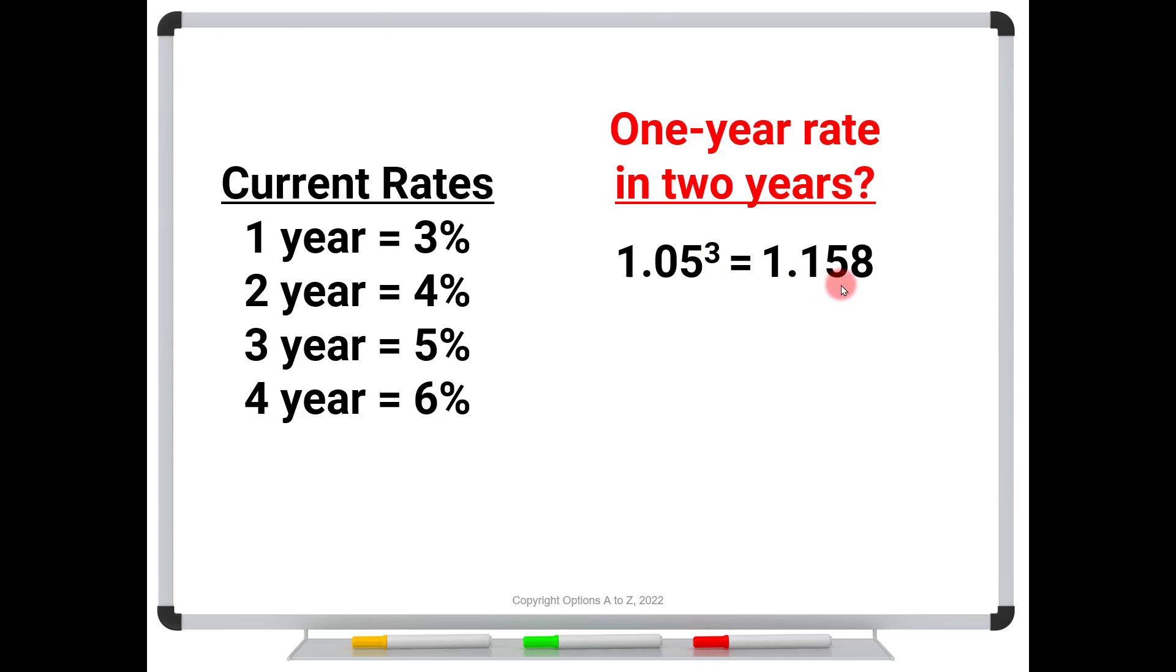One thing I could do is to take the three-year deal, 5% per year. So if you take 1.05 times 1.05 times 1.05, that's the same thing as 1.05 to the third power, which comes up to 1.158, almost 16%. So that's one choice. But I could also take the two-year, take 4% per year, and then renew it for one year at the end of this two-year term. And so to find that rate, I would take the 1.158 divided by 1.04 squared.